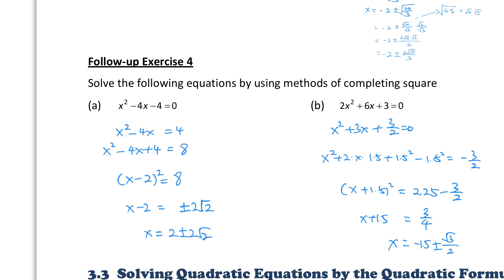For part (b): divide 2 on both sides, then make good use of the identity: x² + 2·x·1.5 + 1.5² − 1.5² = −3/2. Move the constant term to the right-hand side, simplify, and then you can find the answer.